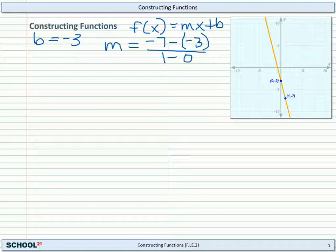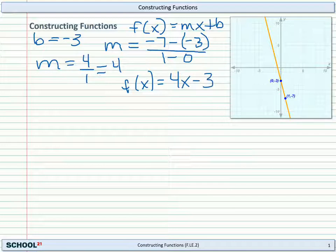So this is going to be a pretty easy calculation. So m is going to equal negative 7 minus a negative 3 is negative 7 plus 3, which is 4 over 1 equals 4. And now we're going to be able to state that f of x equals 4, that's m, x, and then the b is minus 3, 4x minus 3. And that is the equation of the function of this line.